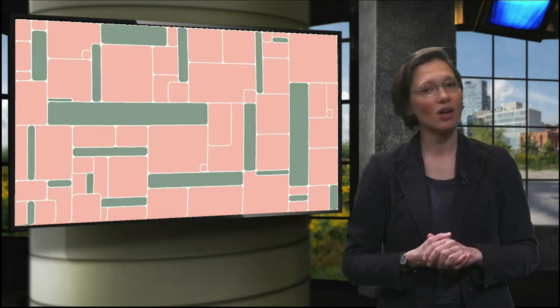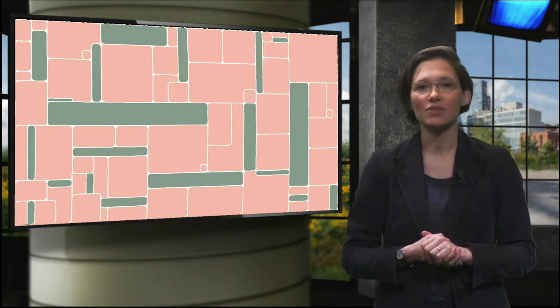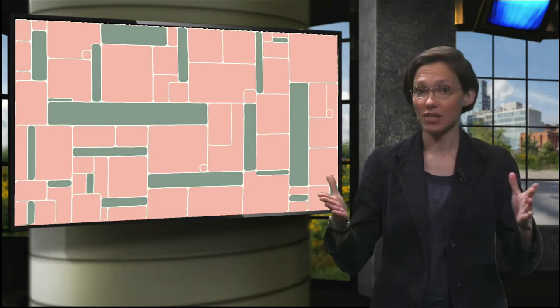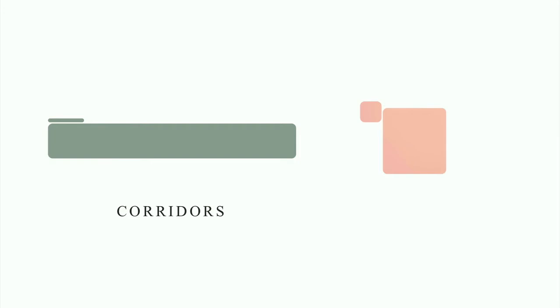From a landscape ecology point of view, a landscape can be considered as a mosaic of different elements fitting together. In general, we can distinguish two types of elements: corridors and patches. Corridors are linear elements like rivers or highways, but in this video the focus mainly lies with patches, as it is strongly related to the notion of space.